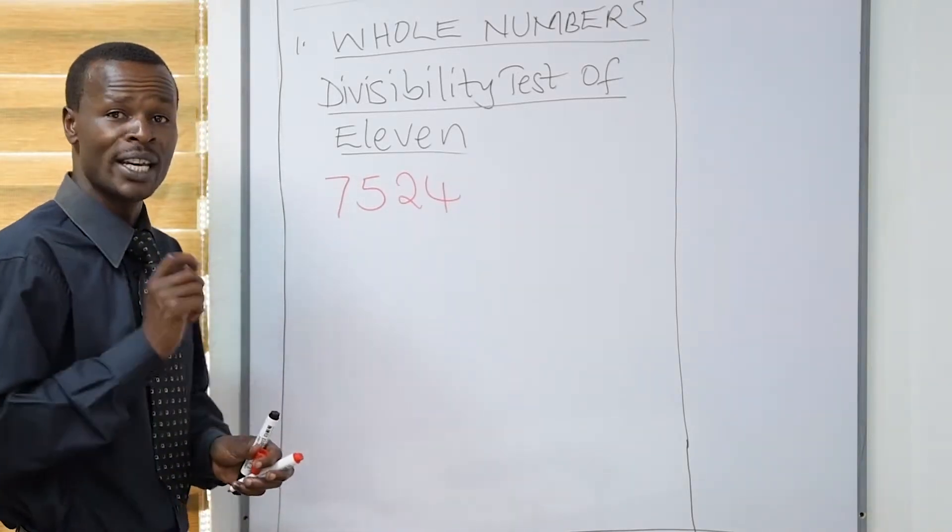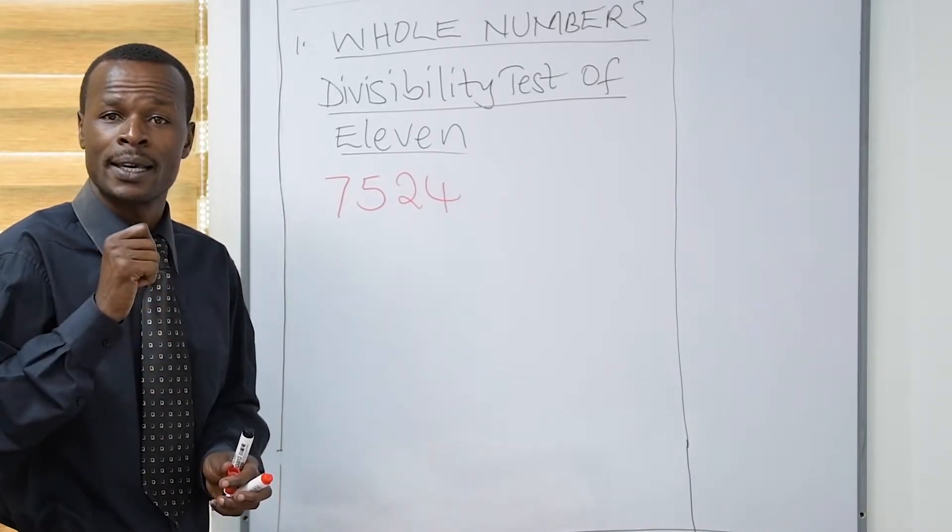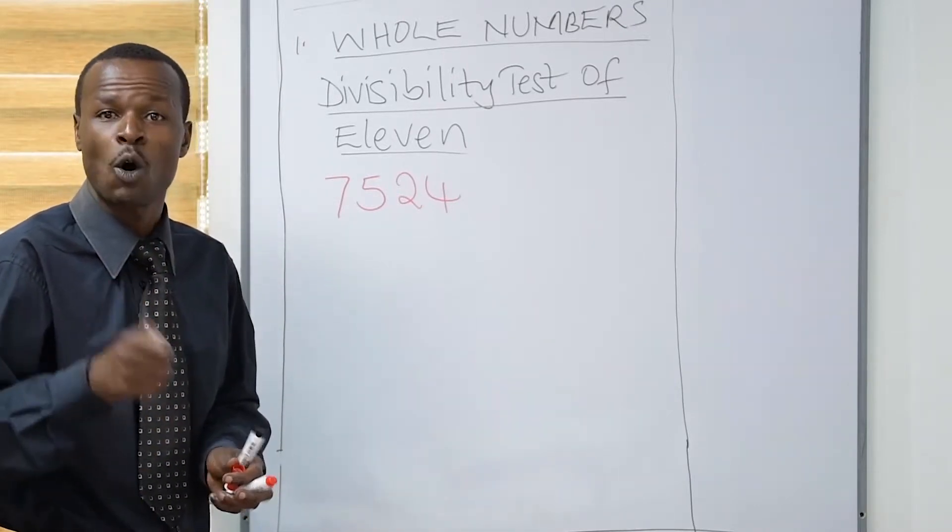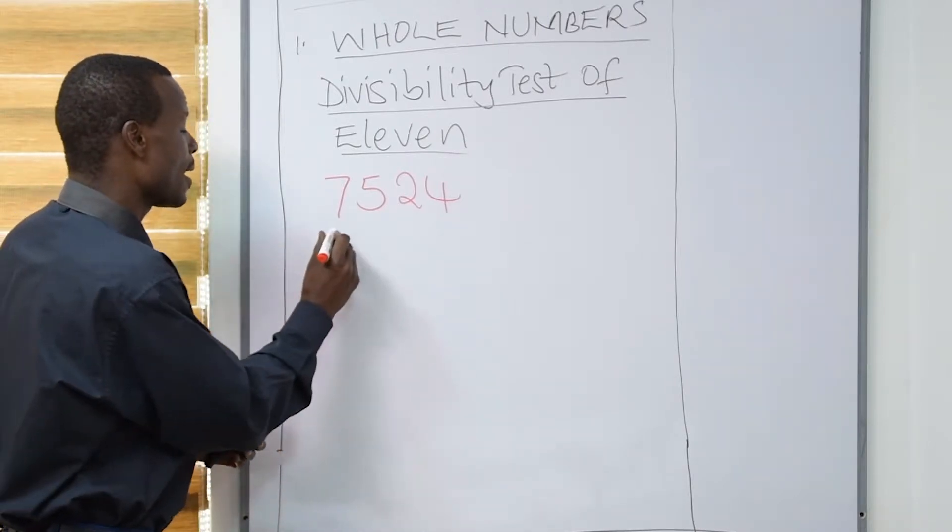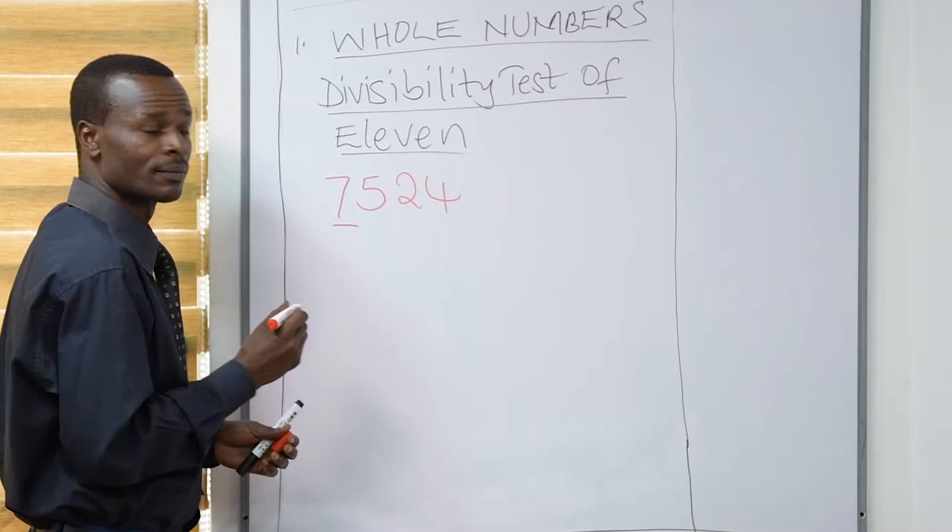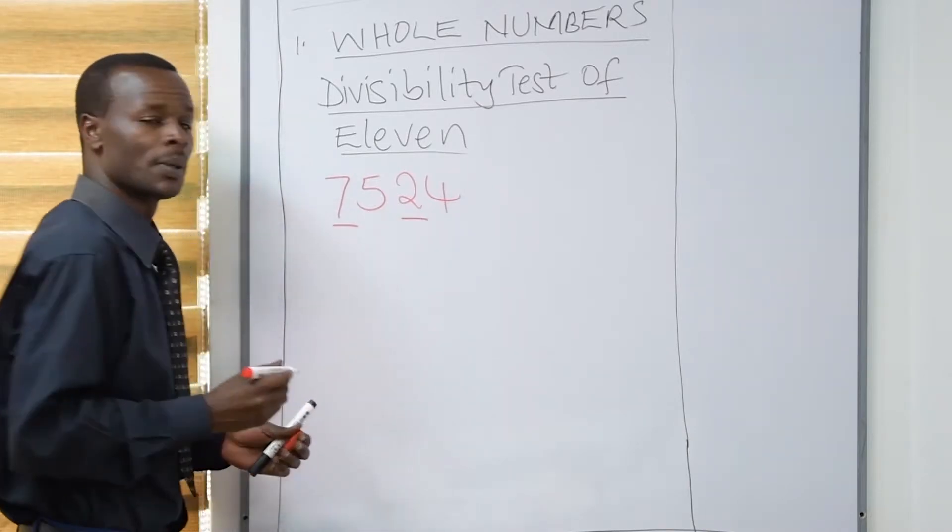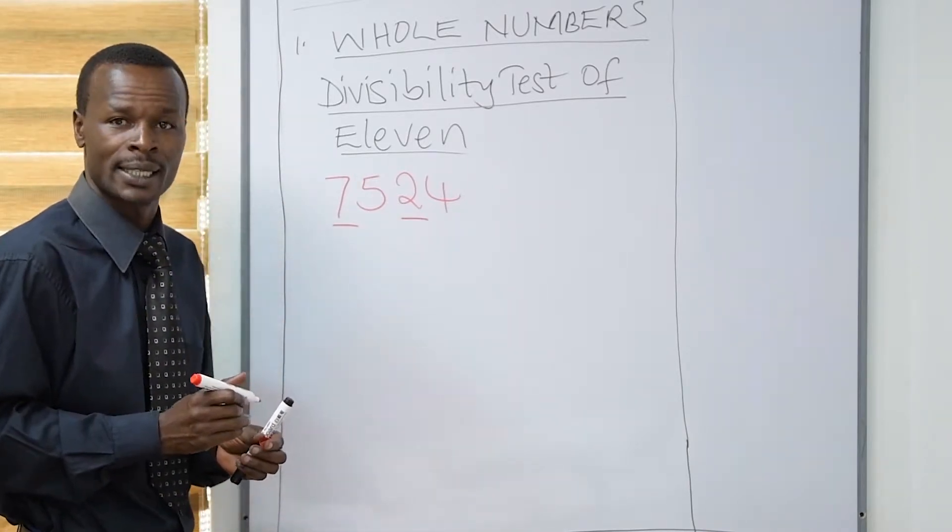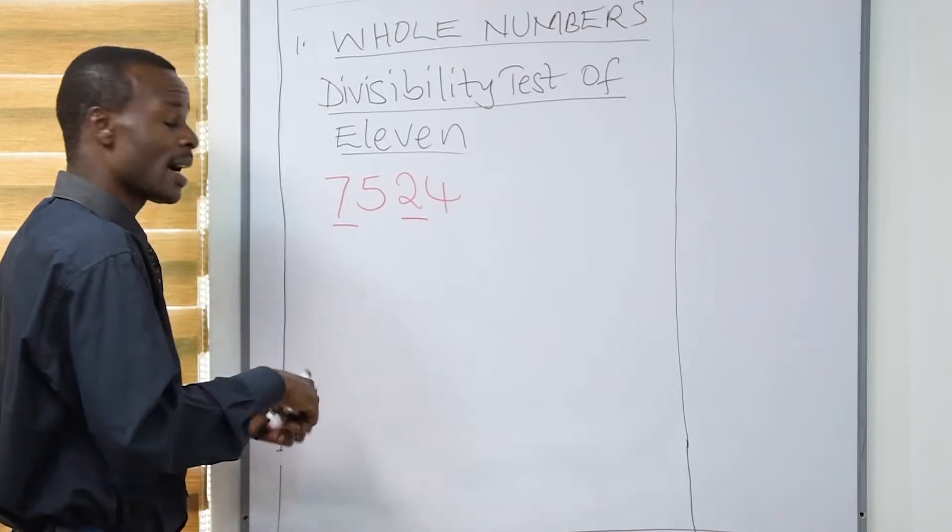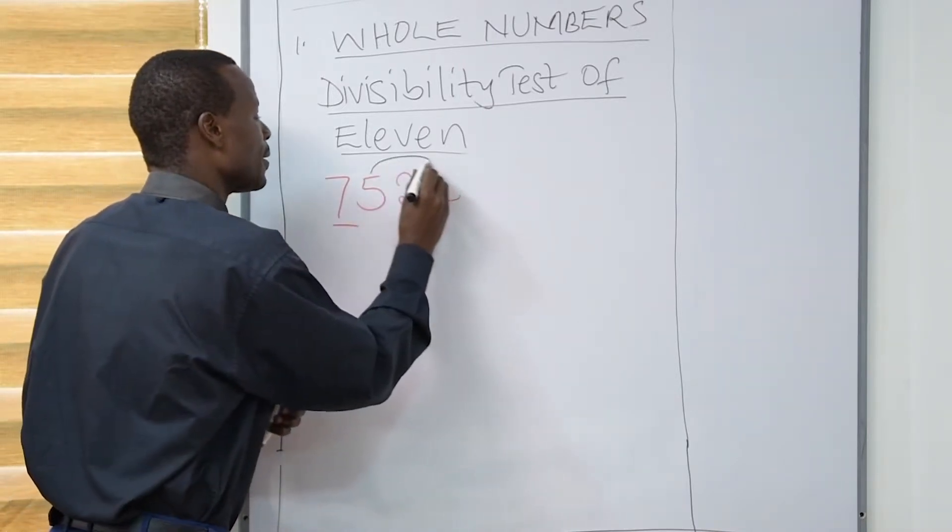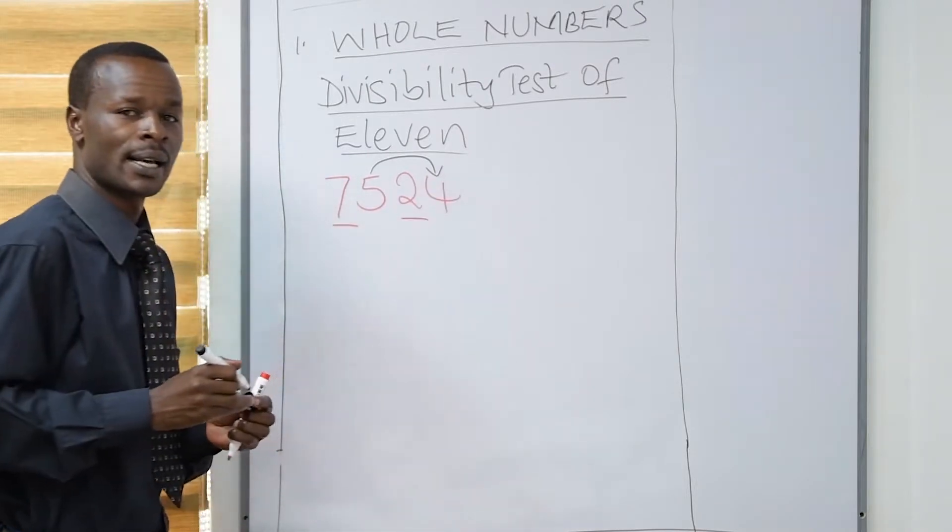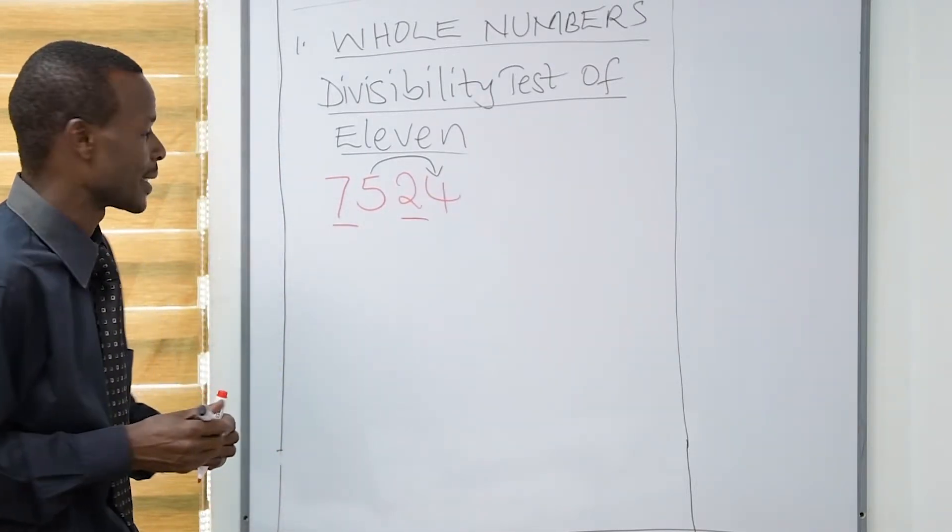First, we need to identify the digits in the alternate places. In this number, the digits in the alternate places are 7 and 2. These two are alternate numbers. Then, another pair is that of 5 and 4. This is another pair of the numbers in the alternate places.